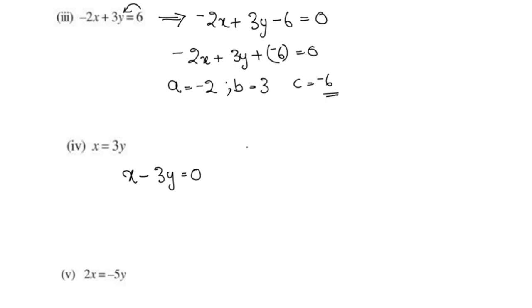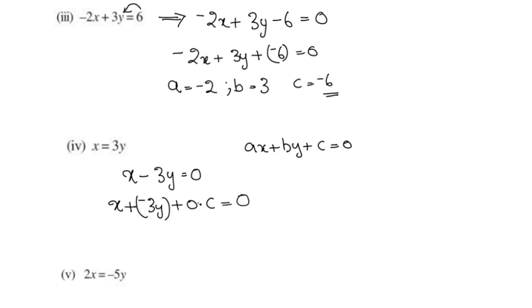For the equation x minus 3y equals 0, we write it as x plus negative 3y plus 0 into c equals 0. Comparing with ax plus by plus c equals 0, we get a is equal to 1, b is equal to negative 3, and c is equal to 0.